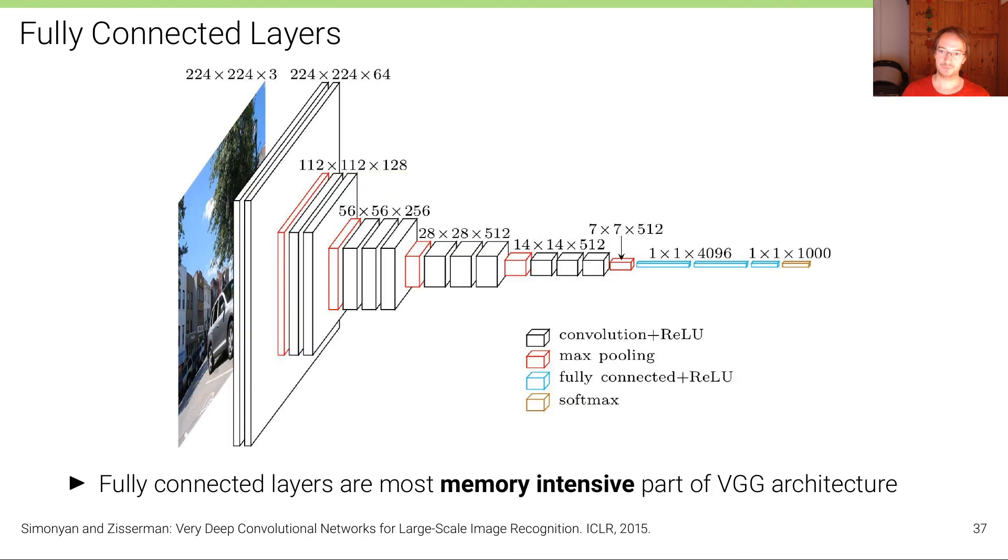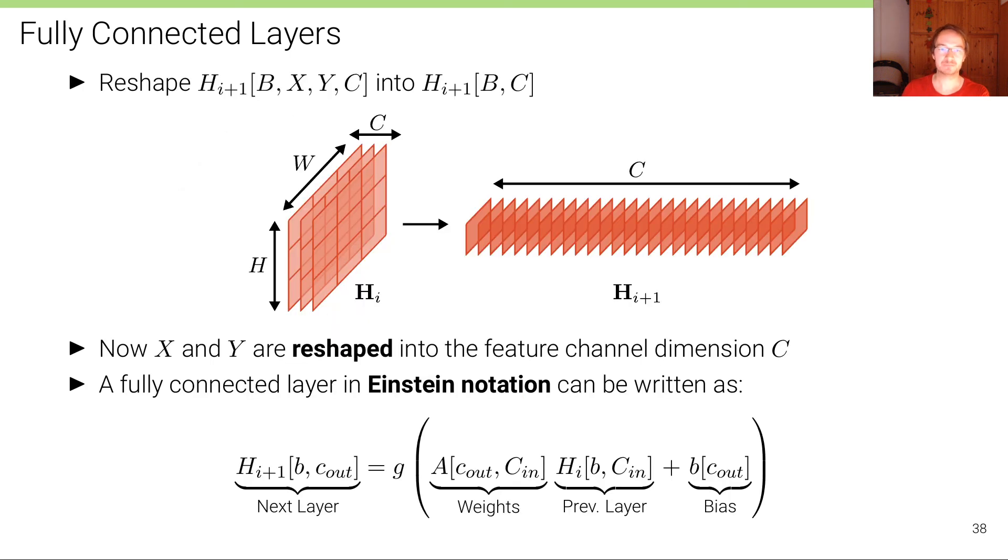In order to apply fully connected layers, we need to shrink the spatial dimensions from 7 by 7 to 1 by 1. How do we do that? We do that exactly the way we shrunk the spatial dimensions of MNIST digits to vectors in our MLP exercise. We simply flatten the inputs.